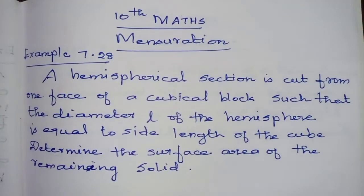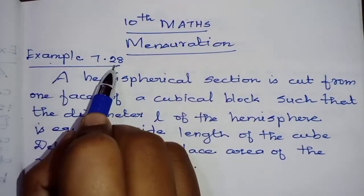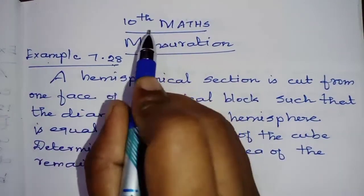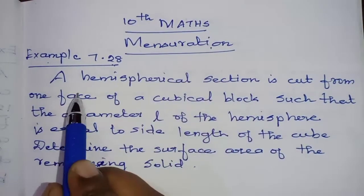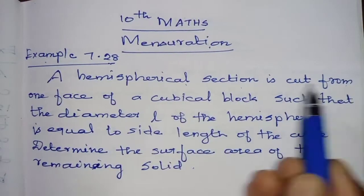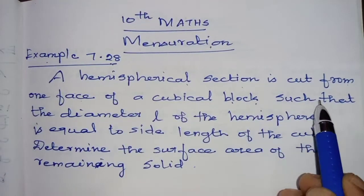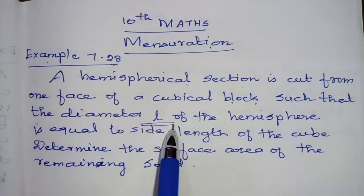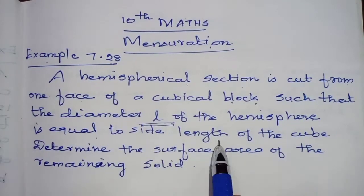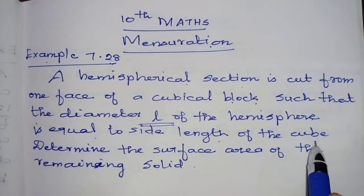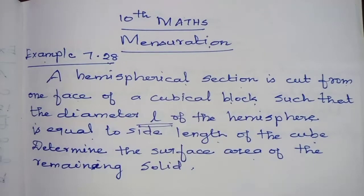Hi students, welcome to Benimax. Here I am going to teach example 7.28 from 10th Samashir textbook, chapter mensuration. A hemispherical section is cut from one face of a cubical block such that the diameter L of the hemisphere is equal to the side length of the cube. Determine the surface area of the remaining solid.